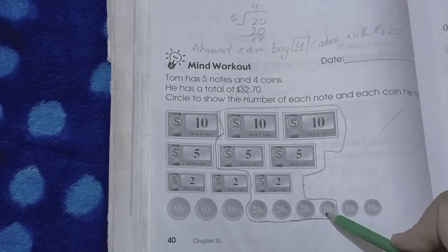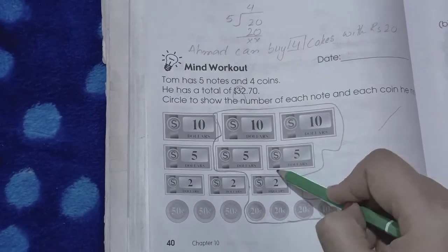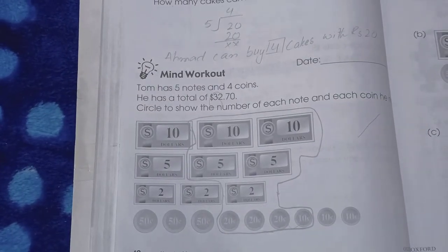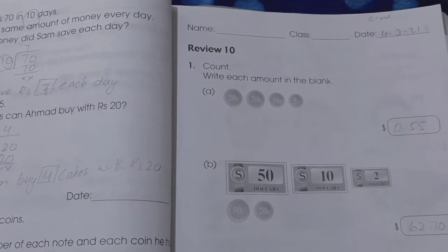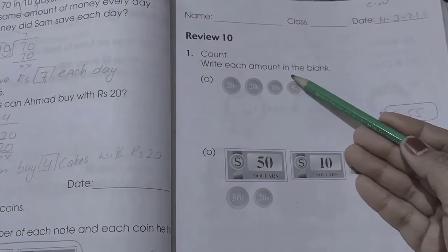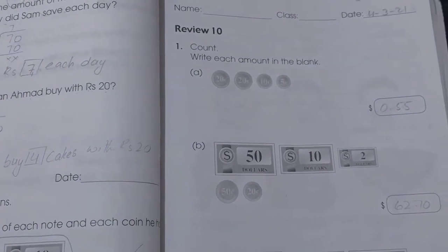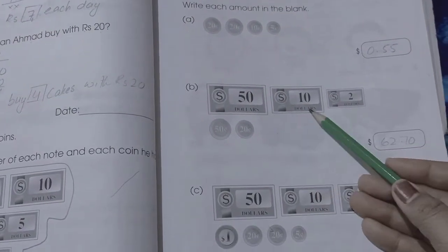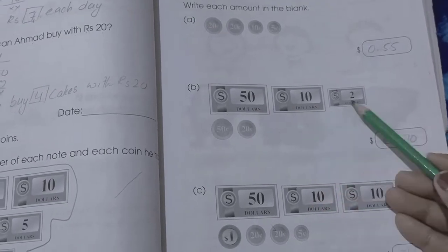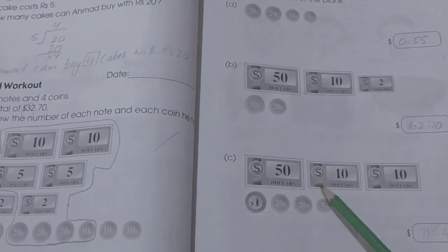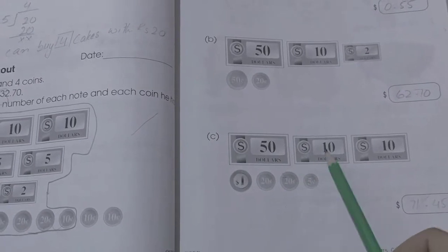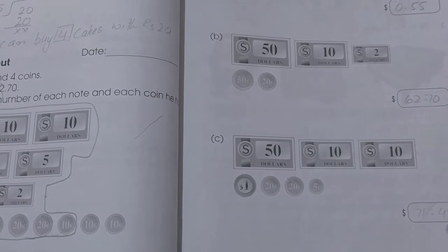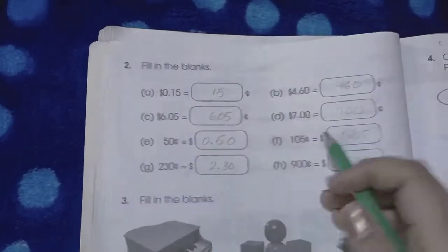Page number 41, review 10. Here we can write the amount in each box. You simply have to count and write. 0.55 because we don't have any dollar here. 50, 60, 62, 62.70. Again 50, 60, 70, 71 dollars 45 cents.